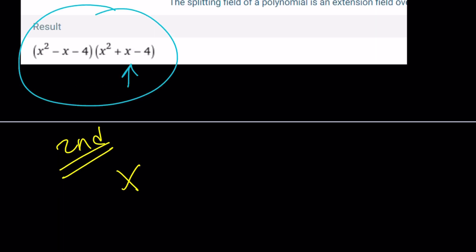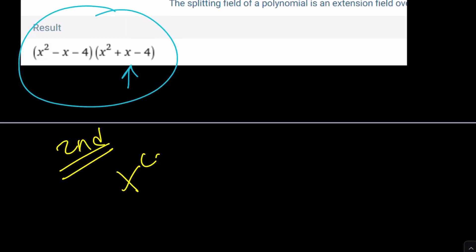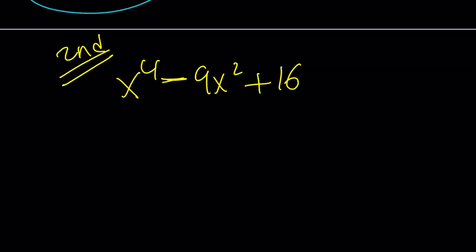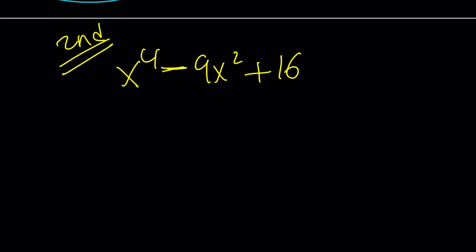So, for my second method, what was the expression? x to the fourth minus 9x squared plus 16. We're going to write this as difference of two squares. So, I'm going to use this one and this one.